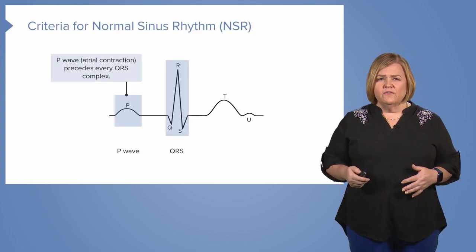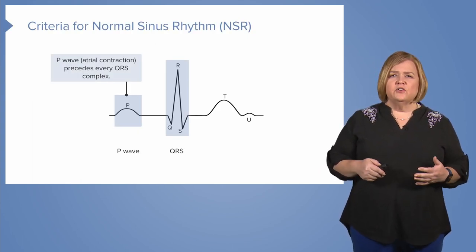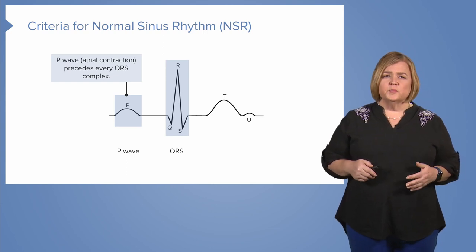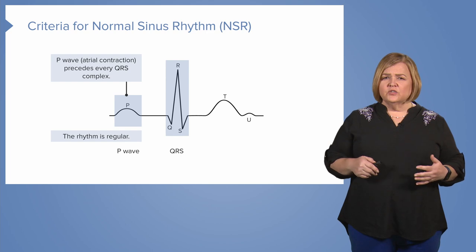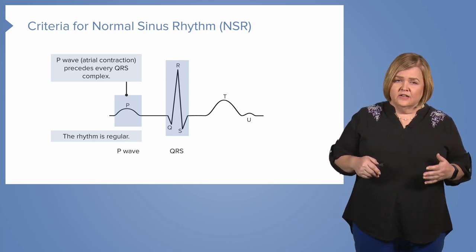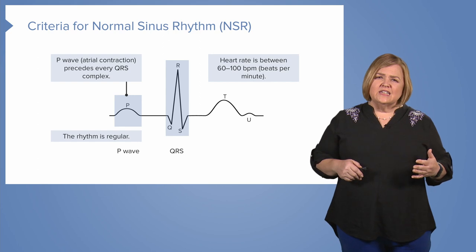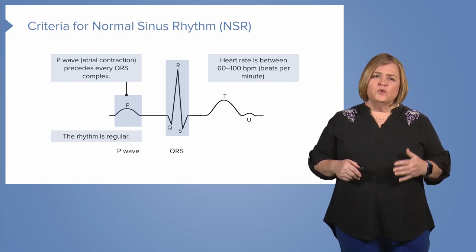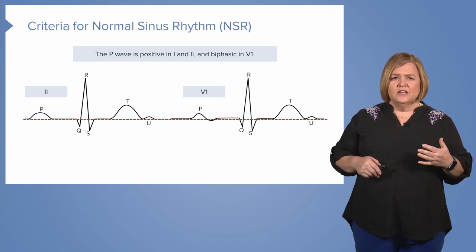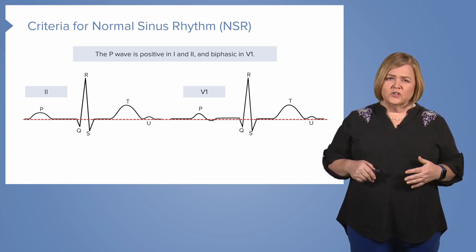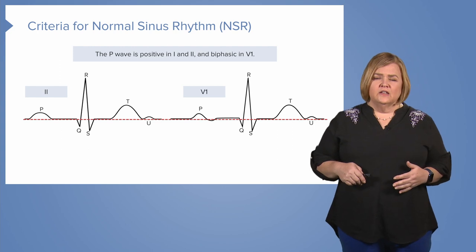In sinus brady, a normal P wave — atrial contraction — precedes every QRS complex. The rhythm is regular but can vary slightly during respirations, as in any sinus rhythm. The rate ranges between 60 and 100 for normal sinus rhythm. The P wave is positive in lead one and lead two, and biphasic in lead V1.